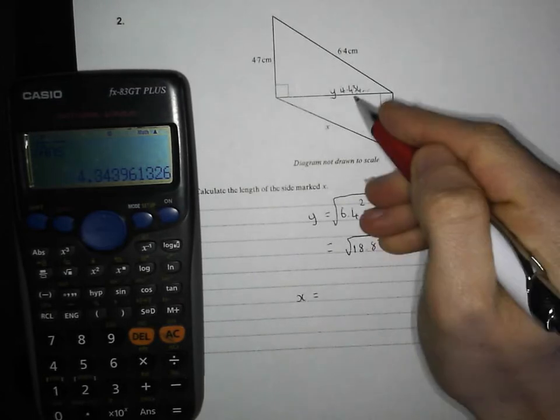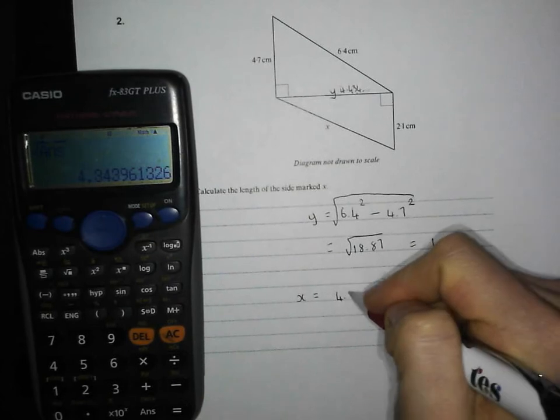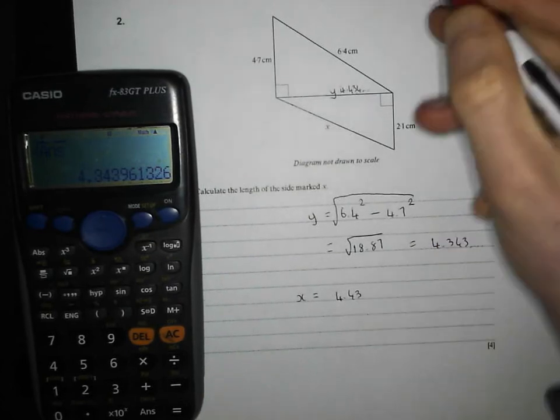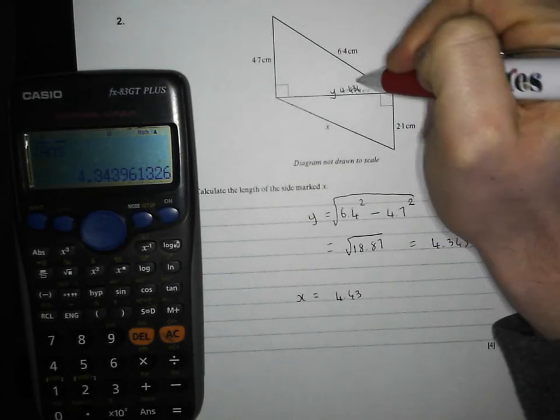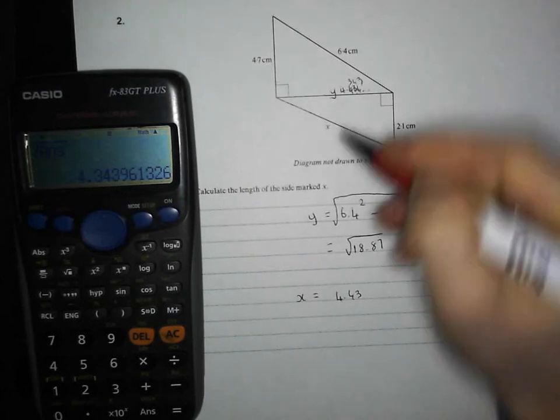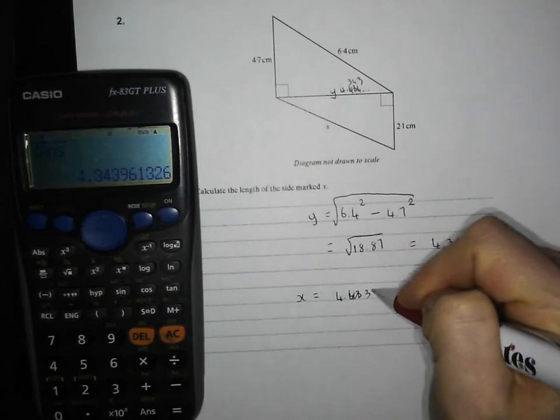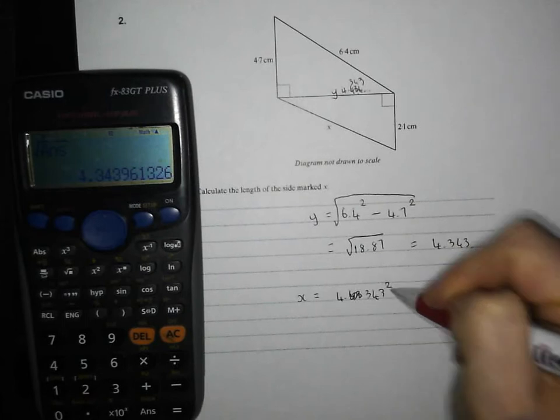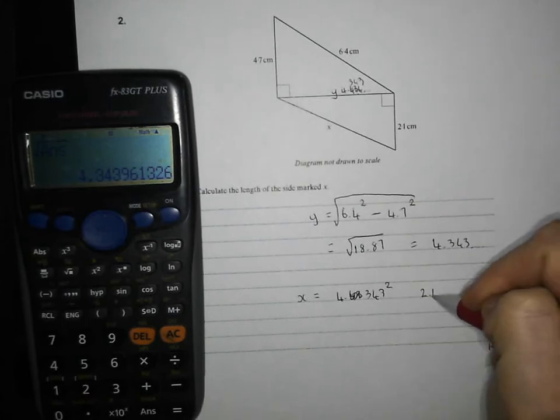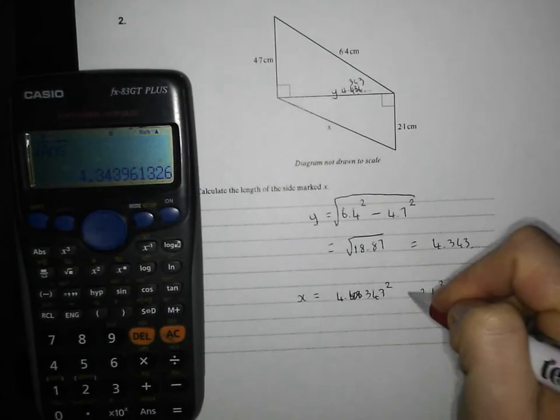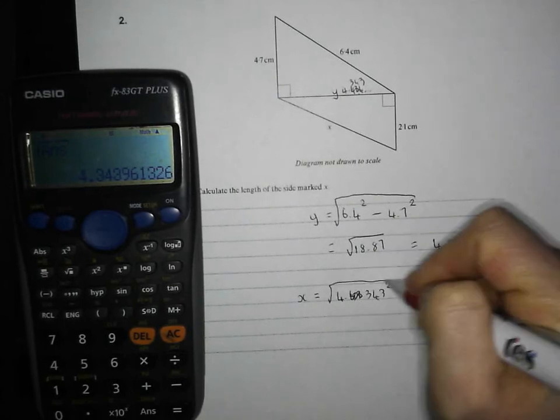So x is going to be equal to 4.43, oh sorry, it's not 4, yeah sorry, I've written that down wrong there. 4.343. 4.343 square it, 2.1 square it, add it, square root the whole answer.